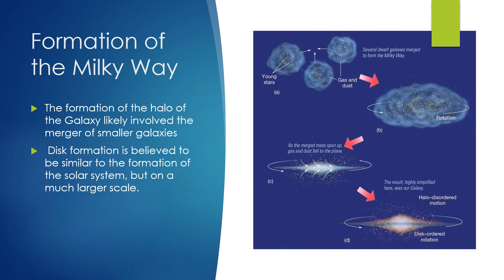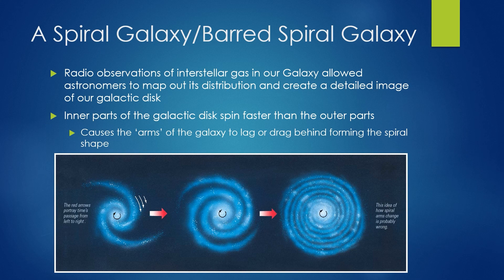How did the Milky Way form? The formation of the halo of the galaxy most likely involves the merger of smaller galaxies. Disk formation is believed to be similar to the formation of the solar system but at a much larger scale — just as the formations of satellites around planets mirrors the solar system, the solar system mirrors the formation of a galaxy. We live in a barred spiral galaxy, and radio studies gave us the best direct evidence for this. By studying radio observations of the interstellar gas in our galaxy, astronomers have been able to map out its distribution and draw a detailed picture of our galactic disk. Because of the disk shape, the inner parts spin faster than the outer portions, which causes the arms of the galaxy to drag behind forming a spiral shape.